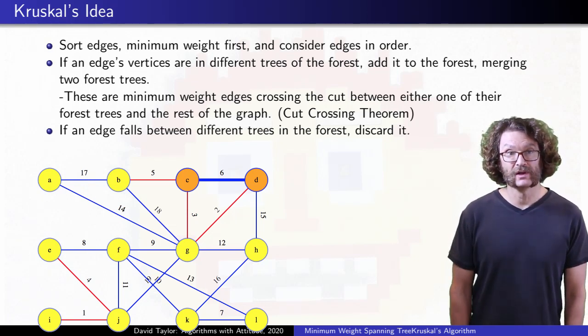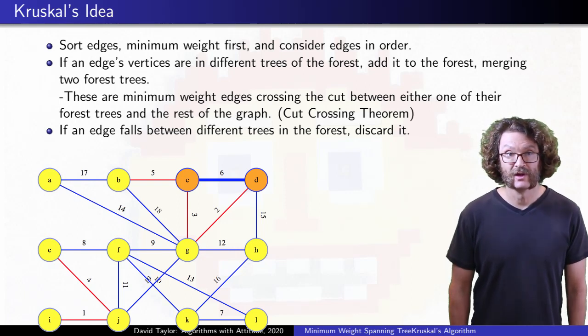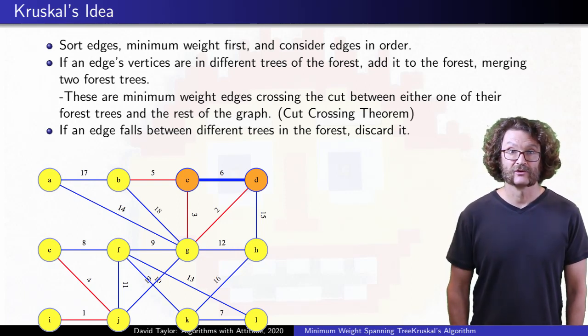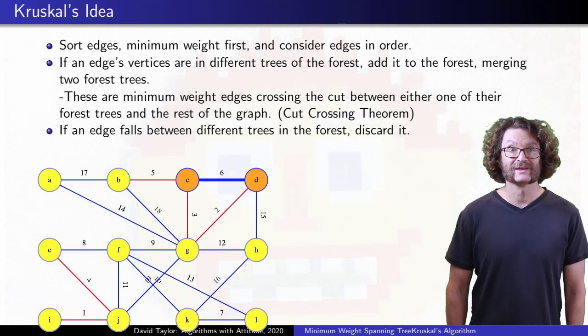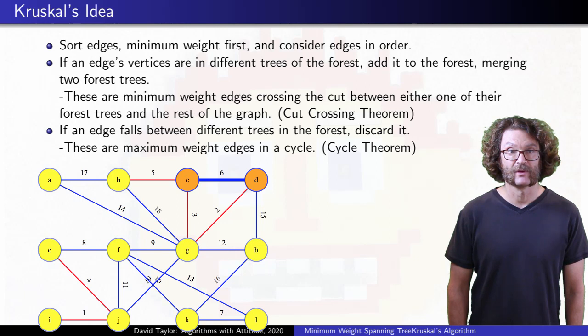C and D are already connected by edges previously added to the forest, and we are taking edges in increasing order, so all of those previous edges weigh less than this one. So this edge has the maximum weight in a cycle from the graph.